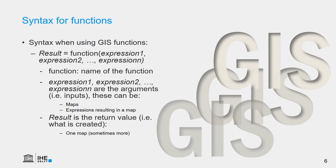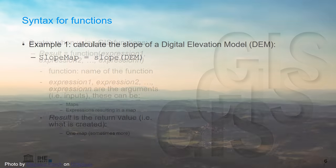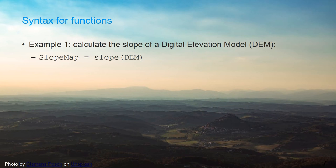Apart from mathematical operators, we can also use functions, and then the syntax is a little bit different. We have a result map that equals the name of a GIS function, and then the expressions, which can be maps or other things that result in a map. The result is a map, and sometimes it can be multiple maps. An example of a function is the slope function. If we have a digital elevation model — a map with elevation values — we can apply the slope function, and the result will be stored in a map called the slope map.